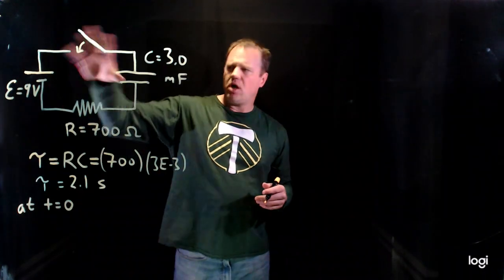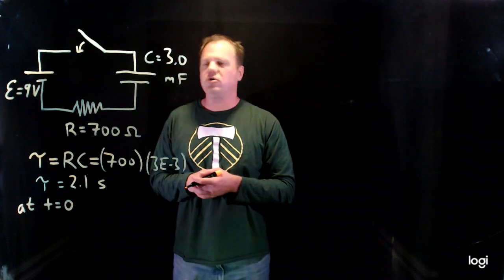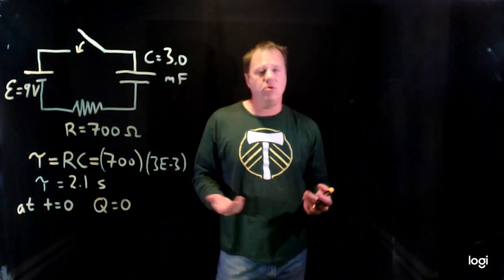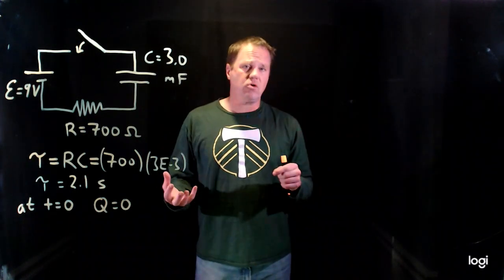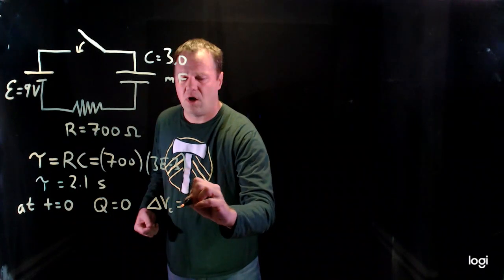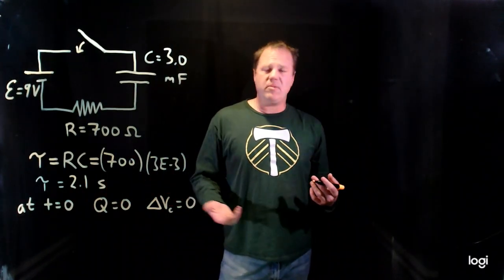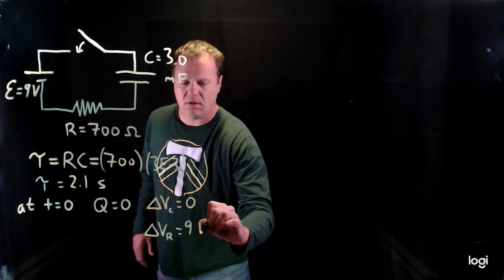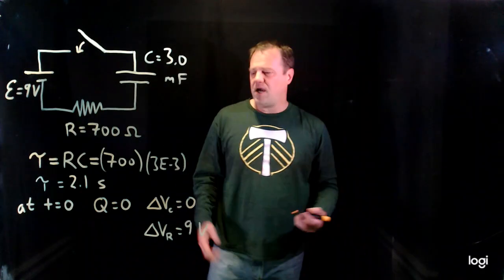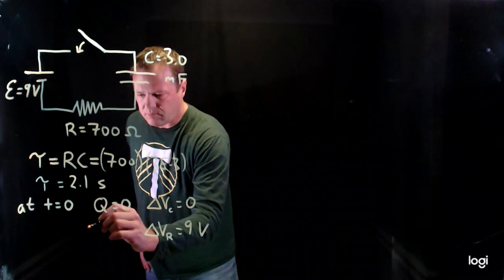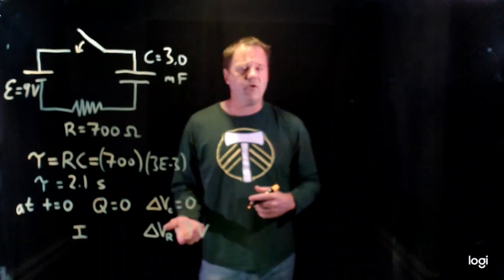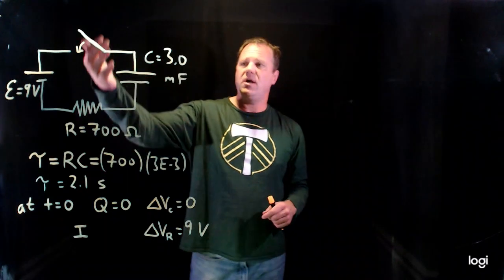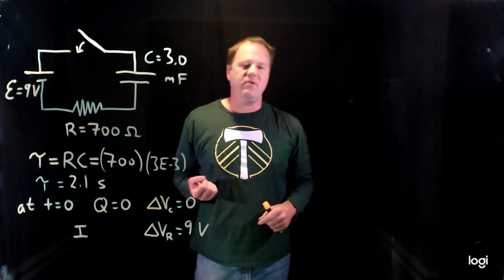If it starts with no charge, it takes time for the battery to push charge onto that capacitor, so the charge is simply zero. Because the charge is zero, using the definition of capacitance, we can find that the voltage across the capacitor also equals zero. And then we can make an assertion about the voltage across the resistor — it will be 9 volts. It gets the full battery voltage at the beginning. The current is the same through the battery, resistor, and is also the displacement current for the capacitor.